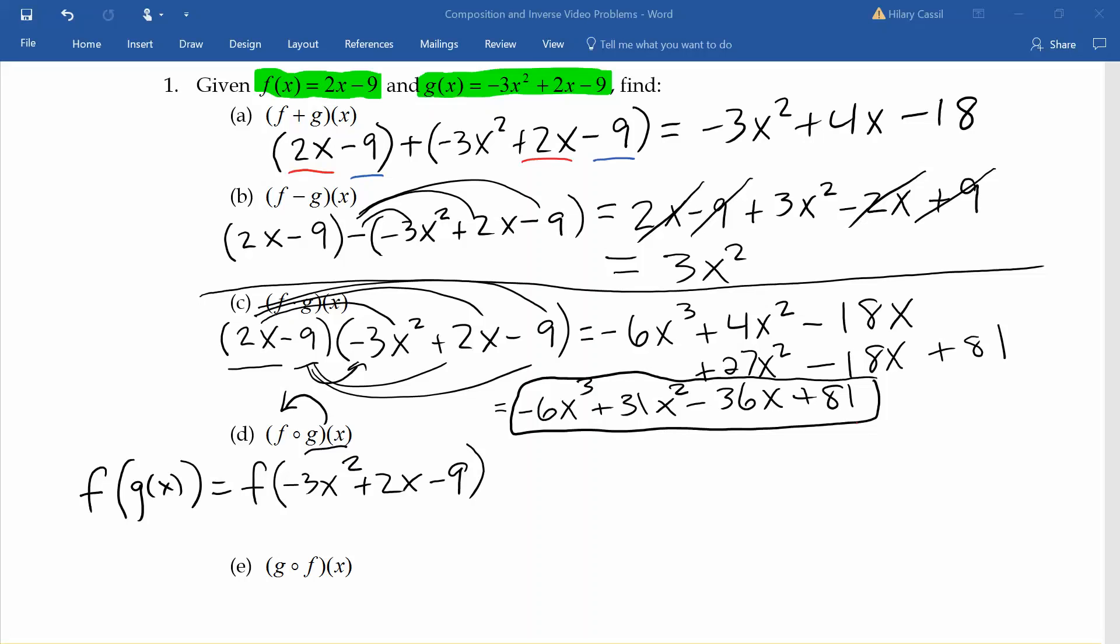This means everywhere there's an x in our function f, we're replacing it with this entire other function. So instead of reading 2x minus 9, it is going to read 2 times our function g minus 9. If we distribute our 2 and combine like terms, we'll get our final answer of negative 6x squared plus 4x minus 27.